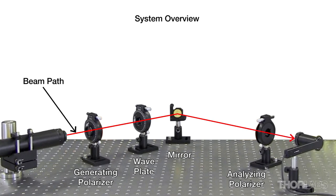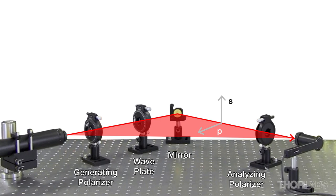The beam path defines the plane of incidence, which is parallel to the horizontal table surface. The plane of incidence defines the orientation of the S and P components. In this case, P is parallel to the table surface and S is perpendicular to the table surface.